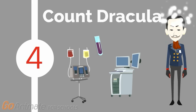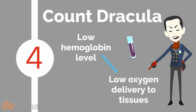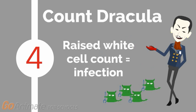Meet Sepsis 4, aka Count Dracula. Sepsis 4 measures serum lactate level and sends a full blood count to the lab. A full blood count should also be taken in order to identify hemoglobin levels. Low hemoglobin levels reduce the delivery of oxygen to tissues. Additionally, a raised white cell count is a strong indicator of infection.